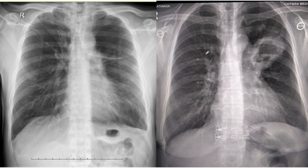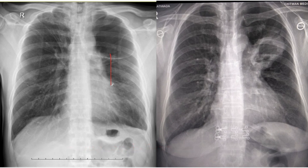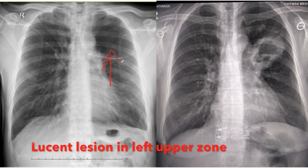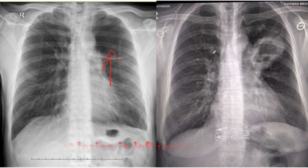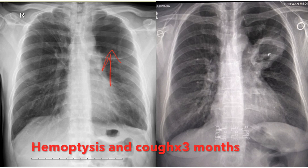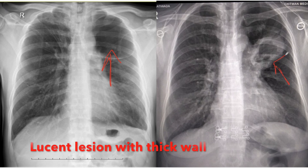Look at these two X-rays. The first patient presented with dyspnea and cough for three months, and we can see a lucent lesion in the left upper zone. The second patient presented with hemoptysis and cough for three months, and here we can see a lucent lesion in the left upper and middle zone with thick wall.